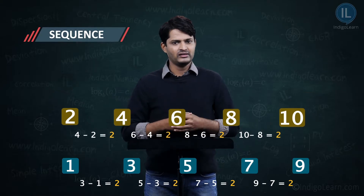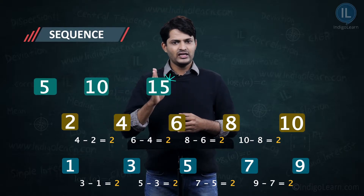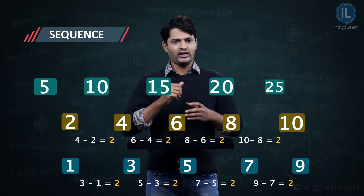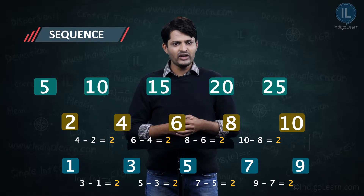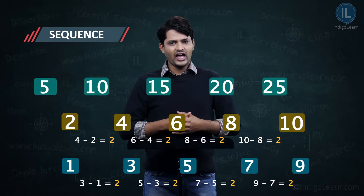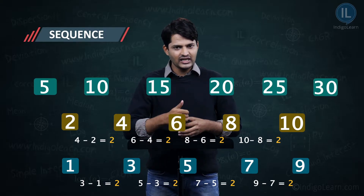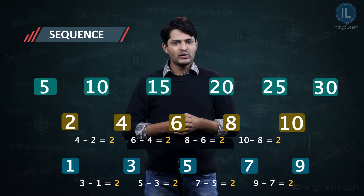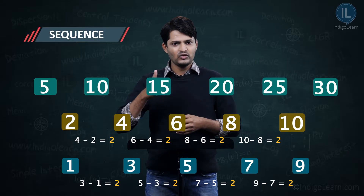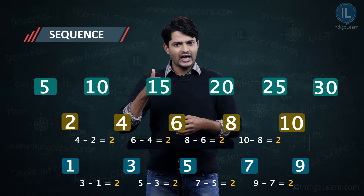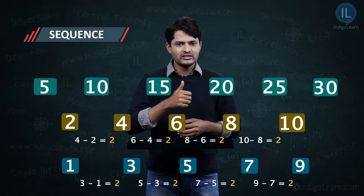Let's take another example: 5, 10, 15, 20, and 25. Can you tell me what is the next term after 25? The next term is 30, precisely because you can identify how the terms are moving — you add 5 to the last term, 25, and get 30.